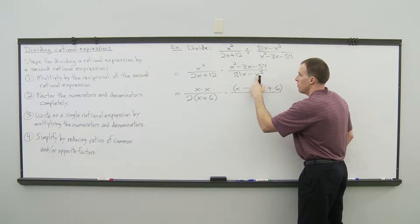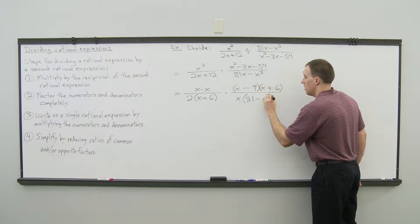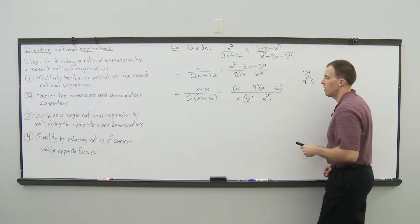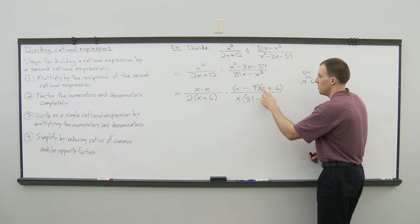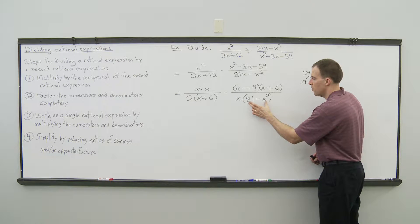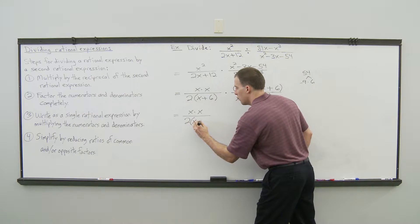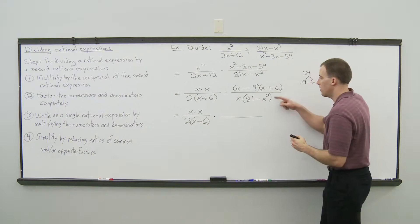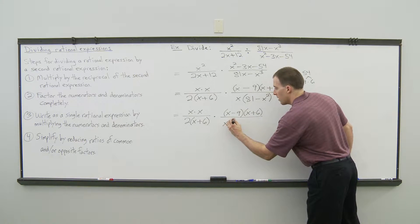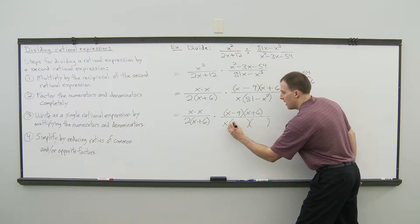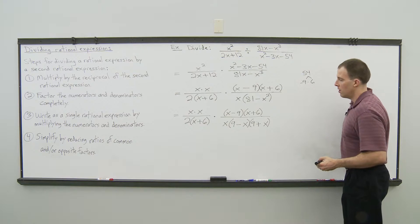For the denominator, it's a two-term binomial with a common factor of x. Factoring out x leaves us with x times the quantity 81 minus x squared. Checking now — the second denominator has a difference of squares, 81 minus x squared, which can be factored further. Since 9 times 9 is 81 and x times x is x squared, with a difference of squares one sign is negative and the other is positive. Everything is now factored completely.